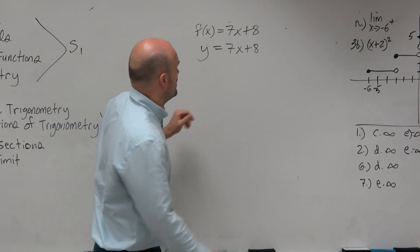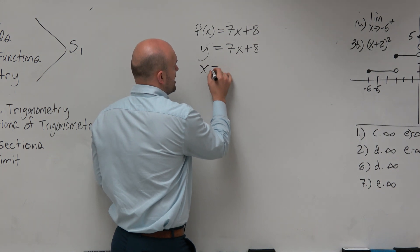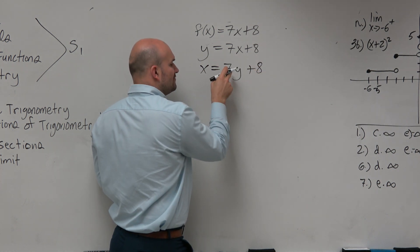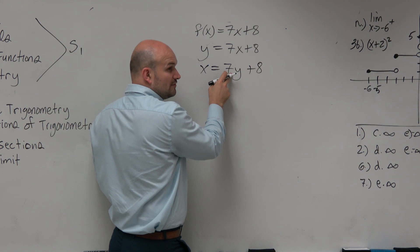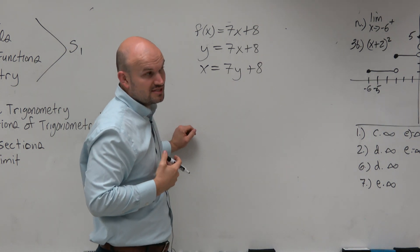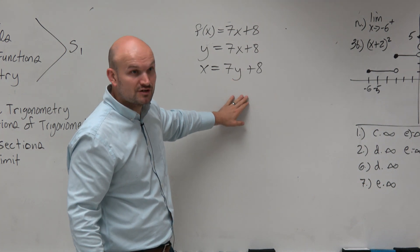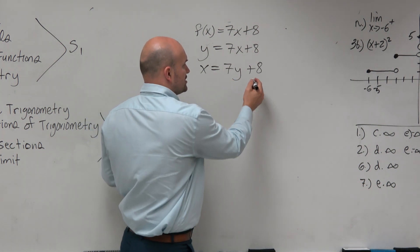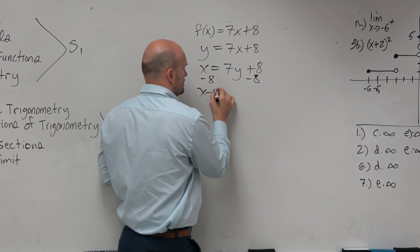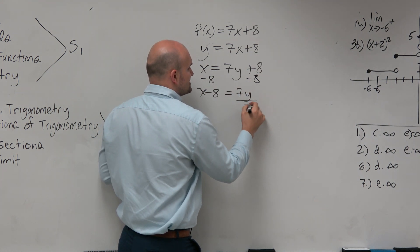So algebraically that's all we're simply going to do as well, to swap the variables and now solve for y. But we've got to be able to solve for y using inverse operations. And this is another mistake that students do, is they don't follow the inverse order of operations correctly. Make sure you guys subtract by 8 first, then divide by 7.